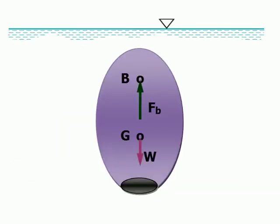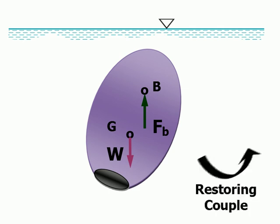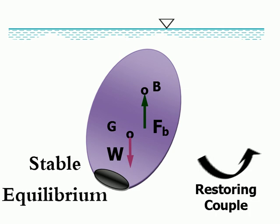For the completely submerged body, which has a center of gravity below the center of buoyancy, a rotation from its equilibrium position will create a restoring couple formed by the weight, W, and the buoyant force, Fb, which causes the body to rotate back to its original position. Thus, for this configuration the body is stable.